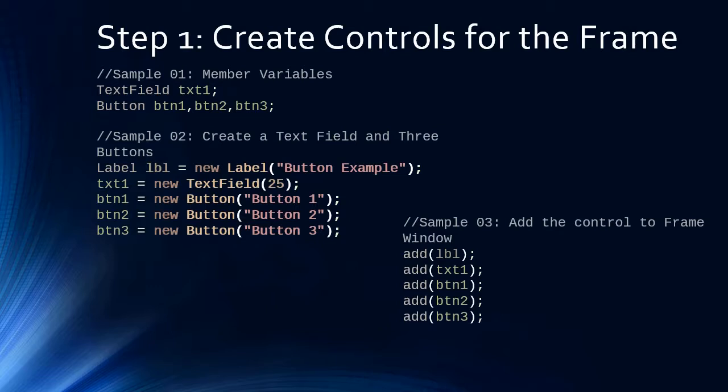After creating the components, we add them to the frame window by calling the add method. The order matters: first we add the Label so it appears first, then the TextField, and finally the three buttons so they appear after the text box. Now we will go to Eclipse, create all these components, see how they appear, and then proceed with the ActionListener part.